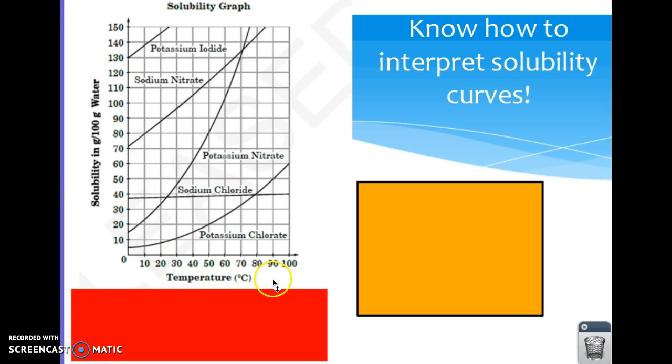Down here is the temperature, usually in Celsius. And then these graphs, these lines on the graph are showing the solubility of that particular compound within that water.